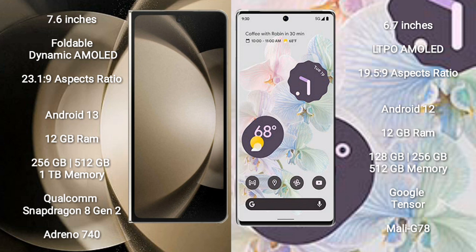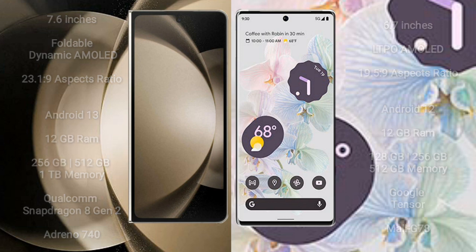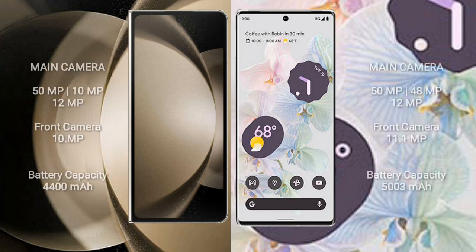Google Pixel 6 Pro comes with 12GB RAM and 128GB or 256GB internal storage, powered by a Google Tensor processor and Mali-G710 GPU.